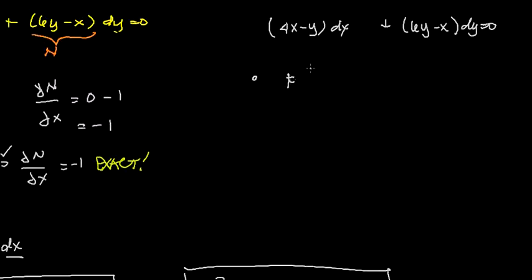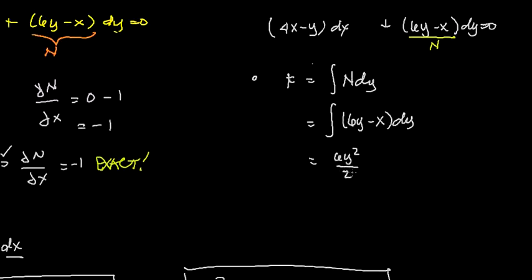First step is, after the test for exactness, f equals the integral of this part, N dy. So we have N dy, then we perform the integration. N is (6y - x)dy by letting x as constant. So we have 6y² over 2 minus xy plus,